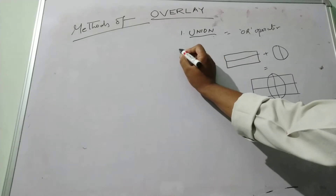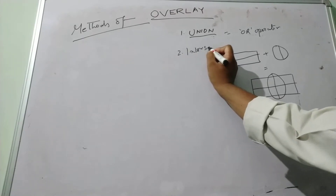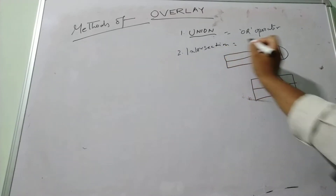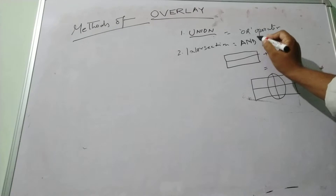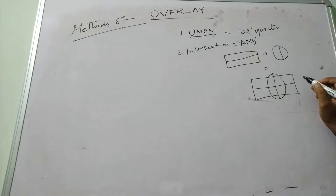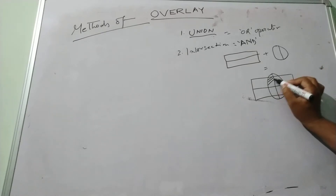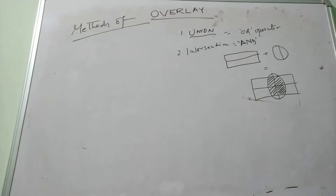Next is Intersection. Intersection uses the AND operator. Intersection comprises the shared features and attribute information from both the input and overlay layers. If we intersect layer 1 and layer 2, we will preserve only the information in the intersecting part, because that is the part common to both layers.